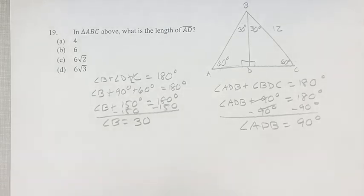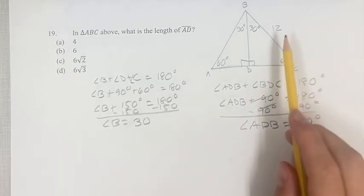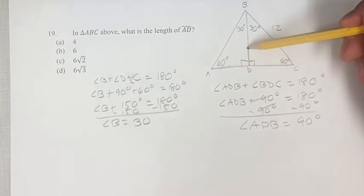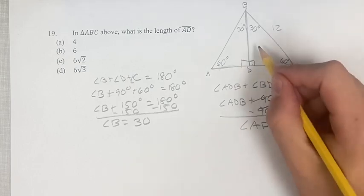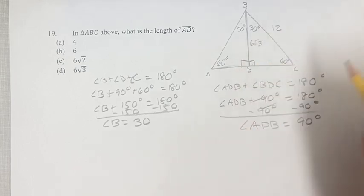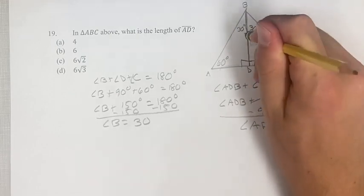Now, we have a couple options here. You can use trigonometry to find this line, which is shared by both triangles. And I'm not going to get into how you do it, but you would find that this is 6 root 3. And then you can use that to find this angle.